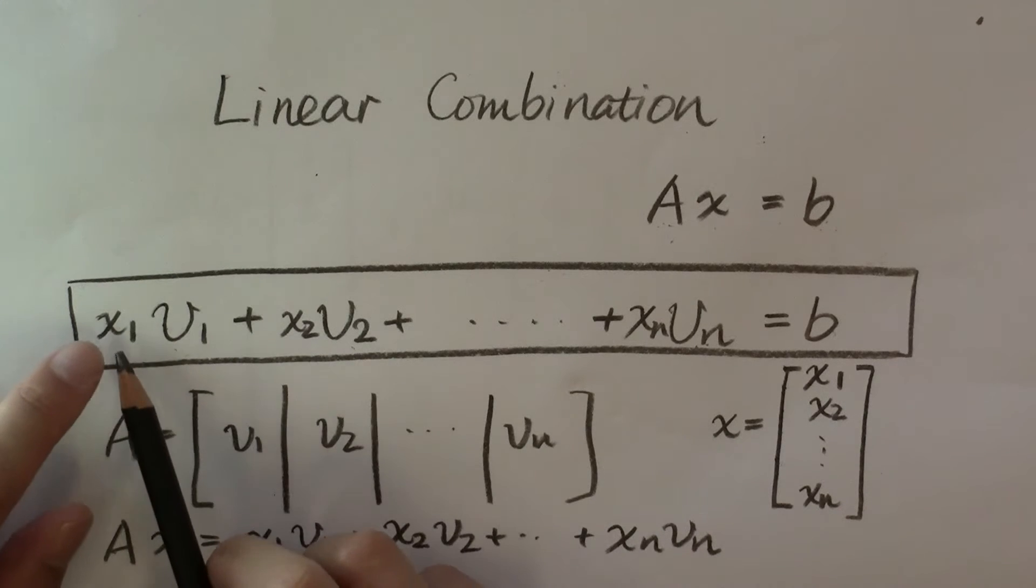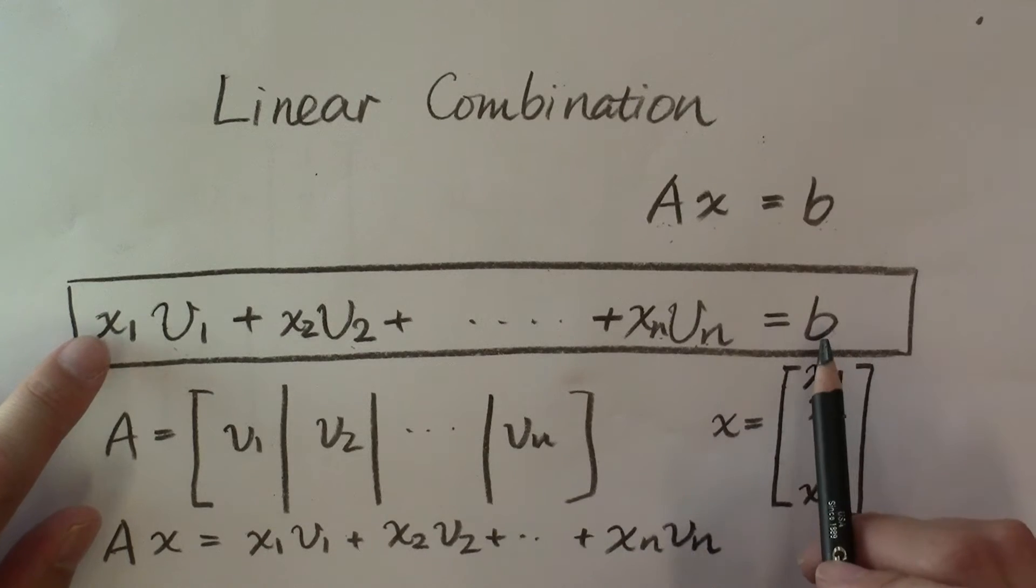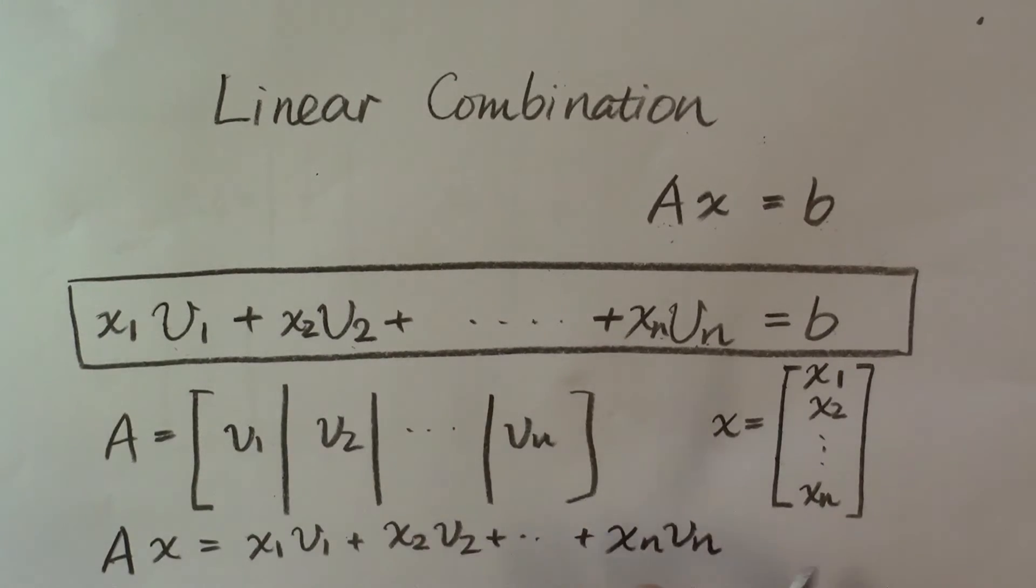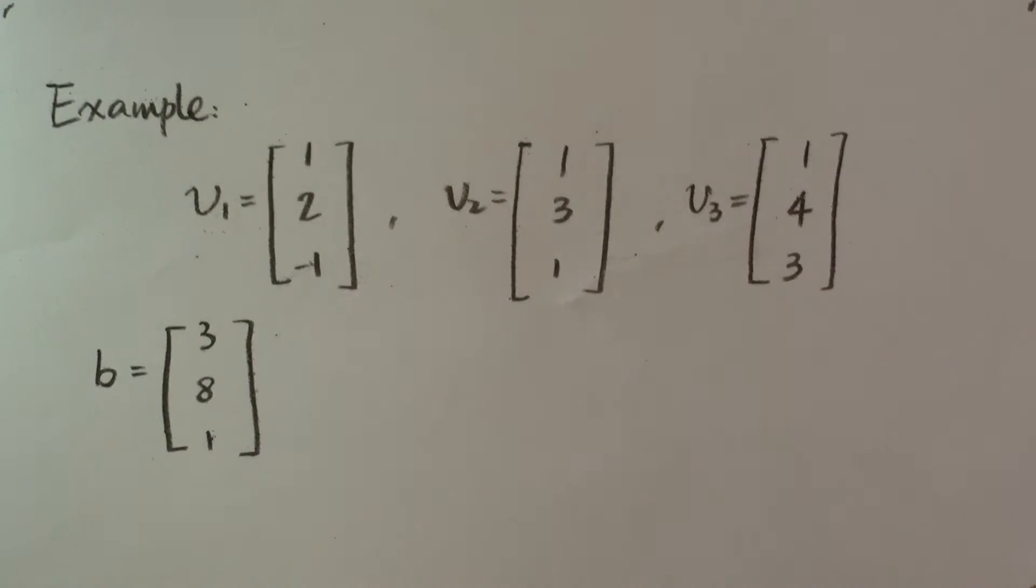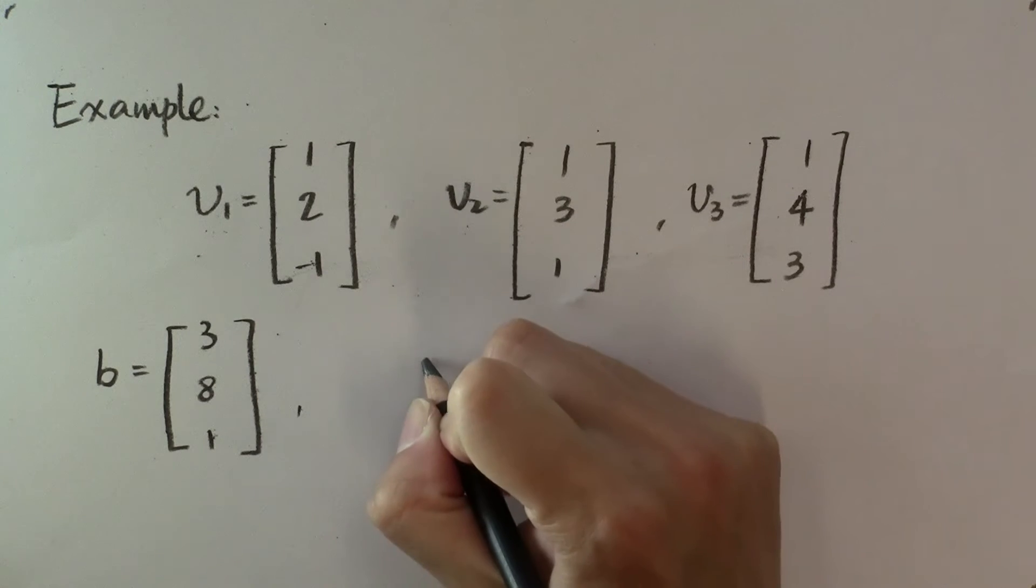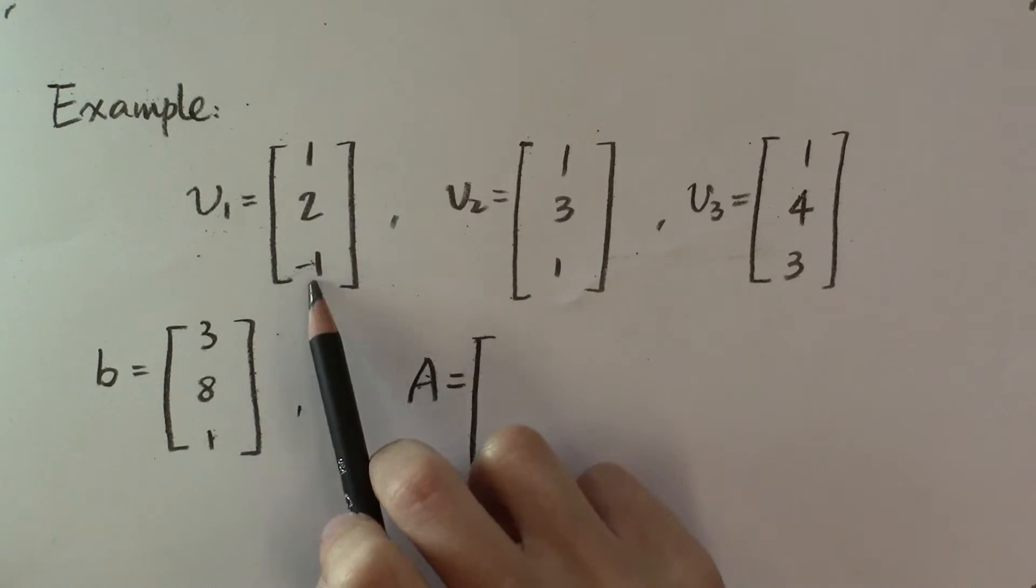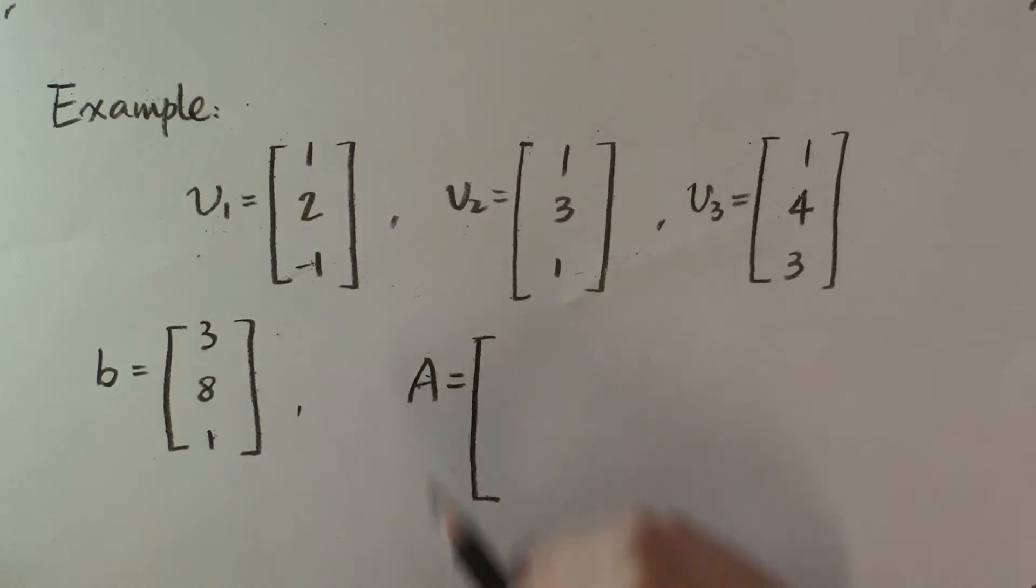And how can you figure out the coefficients x₁ to xₙ so that you can express b in terms of these vectors? That's right, from what we just talked about, we can just make a matrix A, take all these vectors as column vectors.